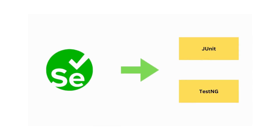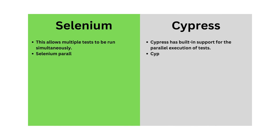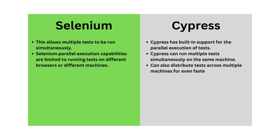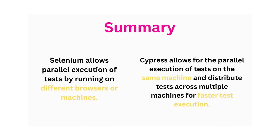In Selenium, parallel execution can be achieved by using a test runner such as JUnit or TestNG, which allows multiple tests to be run simultaneously. However, Selenium's parallel execution capabilities are limited to running tests on different browsers or different machines. Cypress, on the other hand, has built-in support for parallel execution. Cypress can run multiple tests simultaneously on the same machine and can also distribute tests across multiple machines for even faster execution through a built-in plugin called Cypress Parallel.